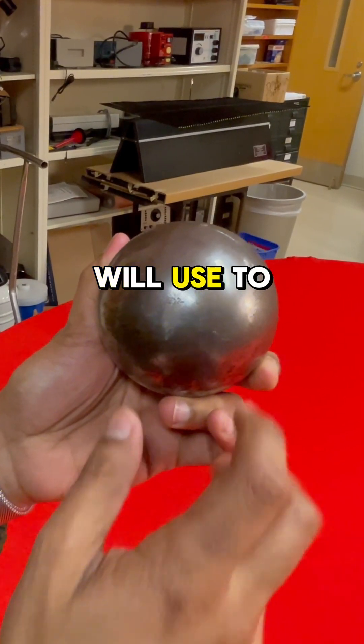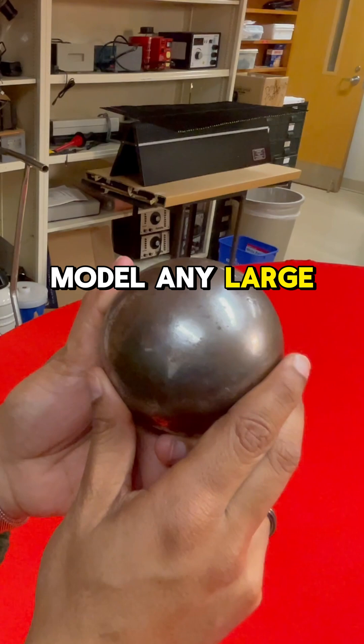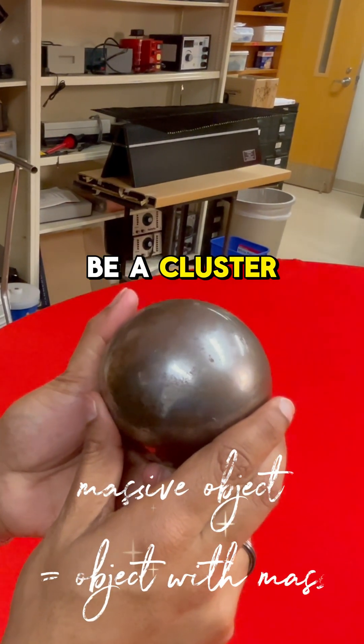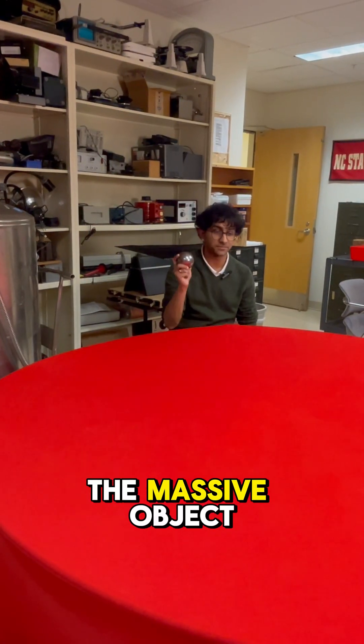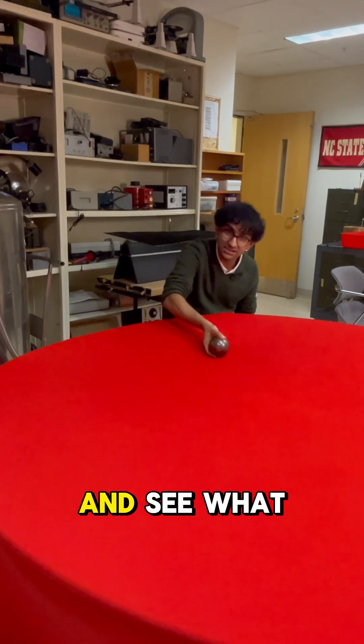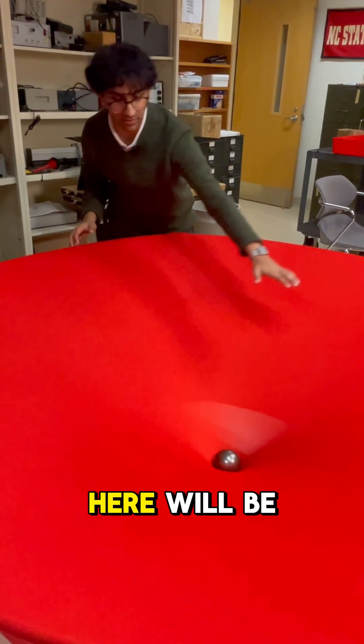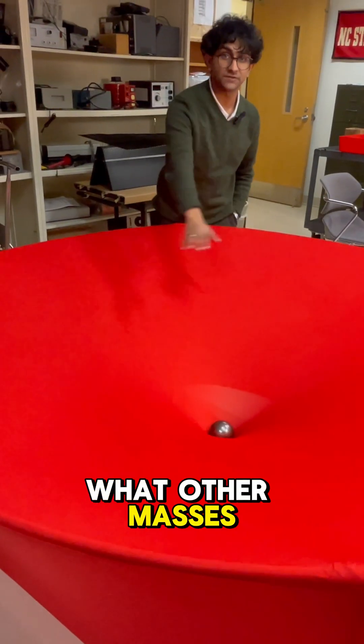This object we will use to model any large massive object. A galaxy, or it could be a cluster of galaxies, and sometimes even a black hole. Now we'll place the massive object in space-time and see what happens to the fabric. These bends of space-time right here will be what other masses follow.